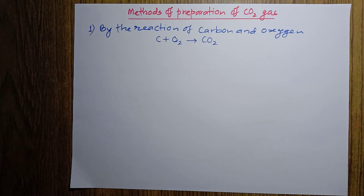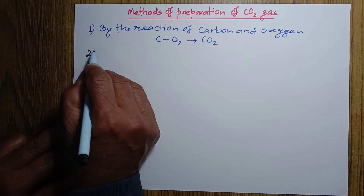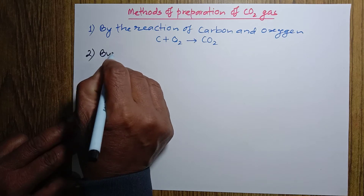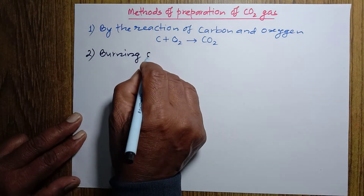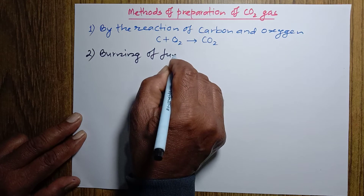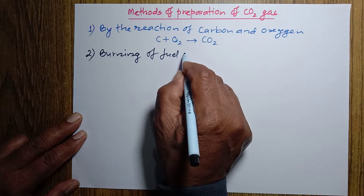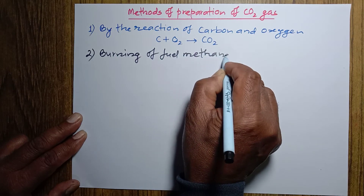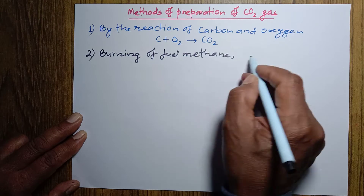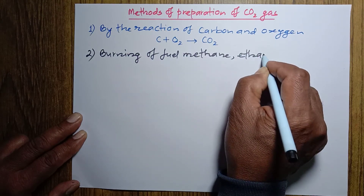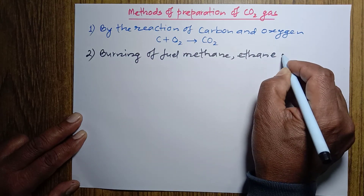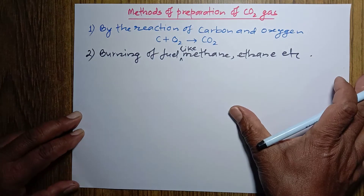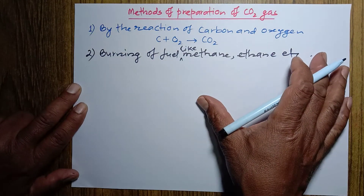Number two: the second method of preparation of carbon dioxide is burning of fuel. There are different fuels, but among them the major fuels are hydrocarbons — normally methane, ethane, etc. Burning of fuel like methane, ethane, etc. produces carbon dioxide gas.